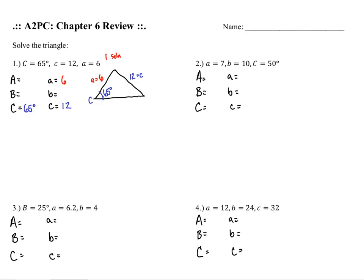I have this nice relationship between angle C and side C. The only means of a solution is to find angle A next. The sine of angle A over its side length equals the sine of angle C over its side length. To find angle A I take the sine inverse — I have to isolate the sine function by multiplying the 6 over to the other side. So I compute the sine inverse of 6 sine 65 divided by 12, making sure to close parentheses, and I get 26.95 degrees.